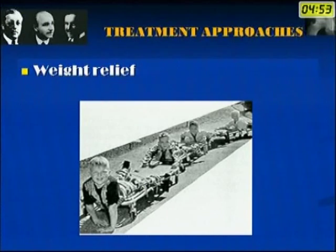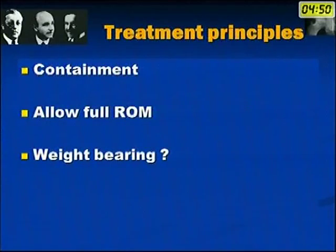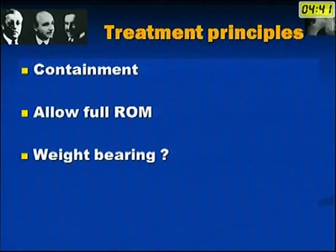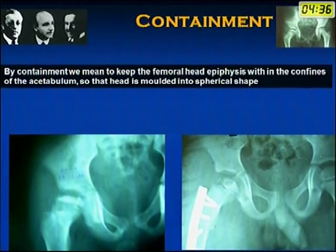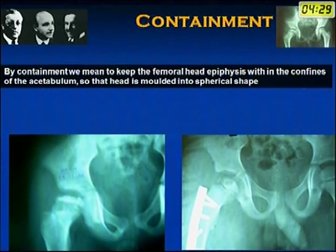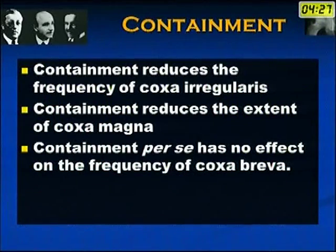Weight relief was one form of treatment followed previously, but now it is not followed. The principles of treatment are containment, allowing full range of movement, with or without weight bearing. By containment, we mean keeping the femoral head epiphysis within the confines of the acetabulum so the head is molded into a spherical shape. Containment reduces the frequency of coxa irregularis and coxa magna, but has no effect on coxa breva.